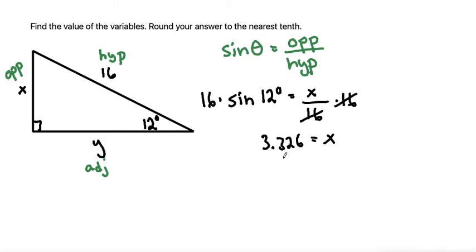It says to round the answer to the nearest tenth. The tenth is the first place behind the decimal, so we need to round it to the three. The two to the right of it is not greater than five, so it'll stay the same. So x will be equal to 3.3.